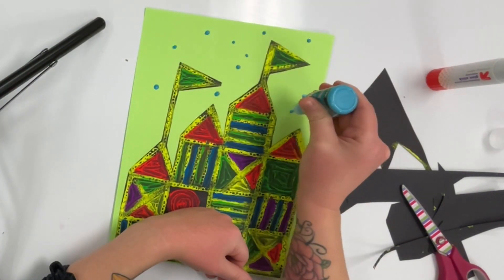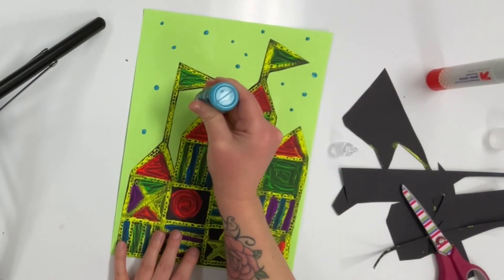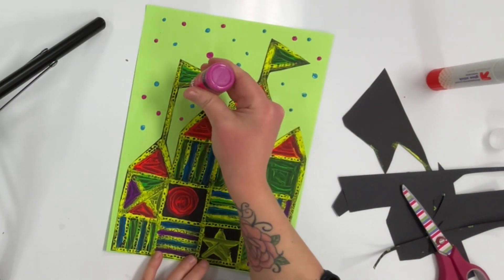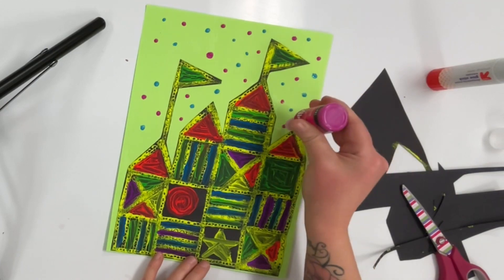I'll even add some extra details now like these colorful dots in the sky, and when I'm done I'll have a colorful shaped castle inspired by Paul Klee and Mary Blair.